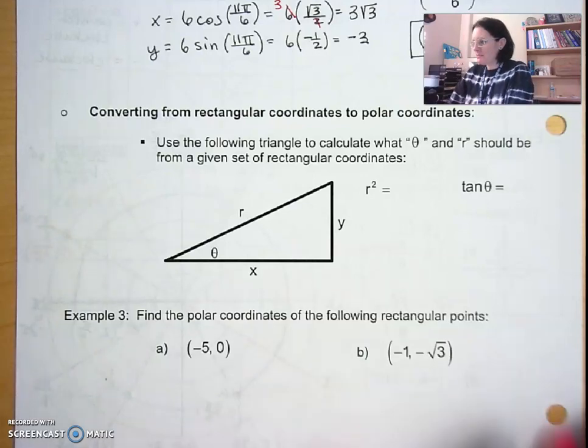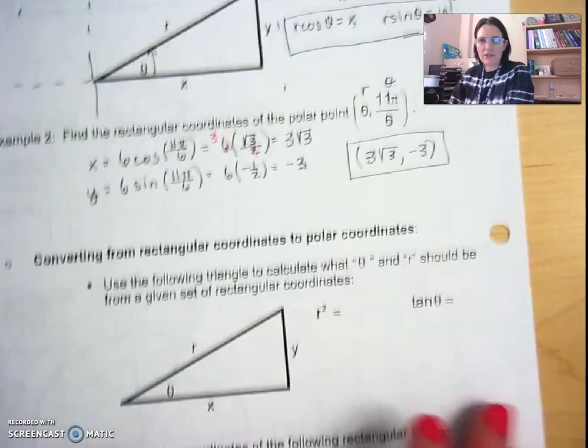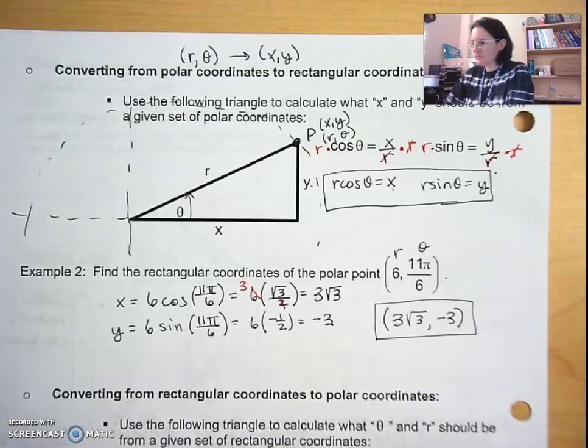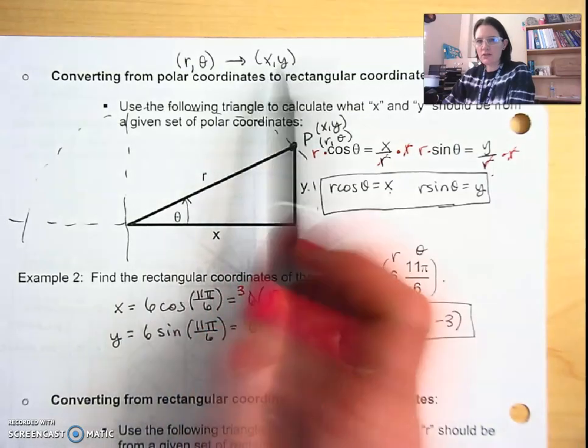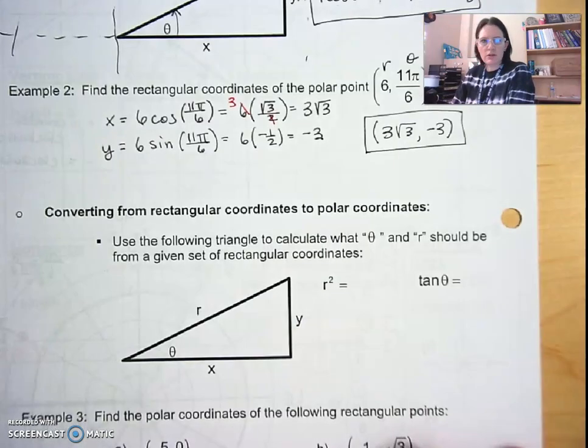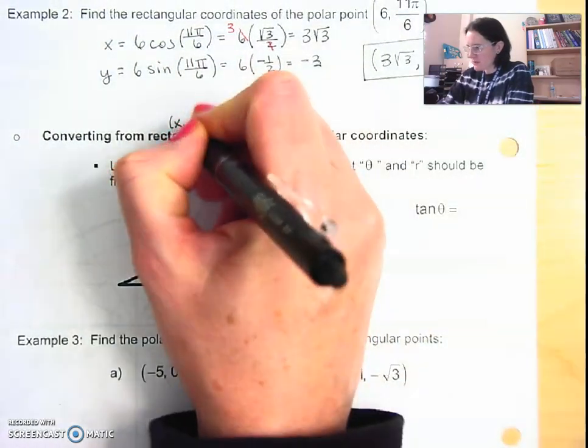Alright, here's the bottom part of our notes. We just finished converting from polar to rectangular, so now we'll do from rectangular to polar. Rectangular is when you're given standard x, y coordinates.